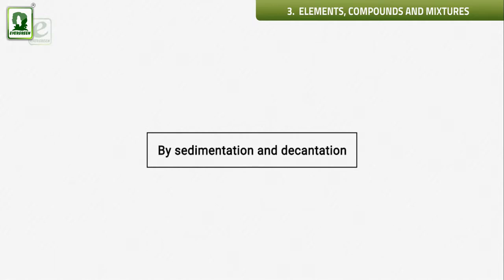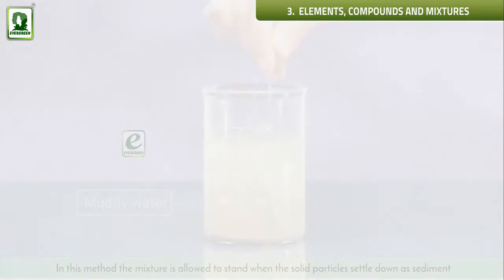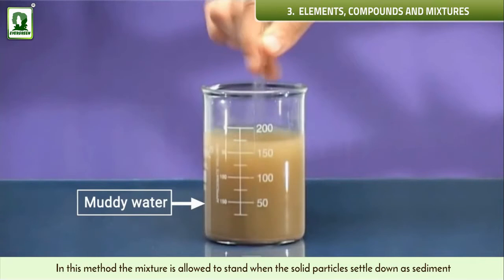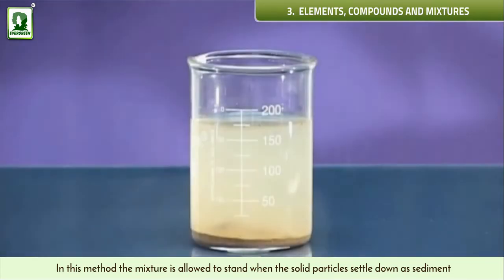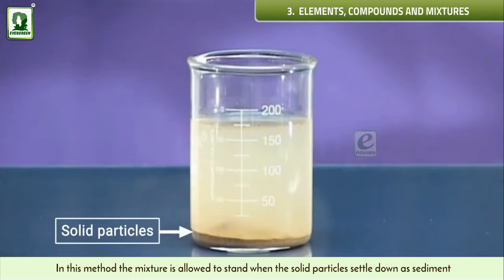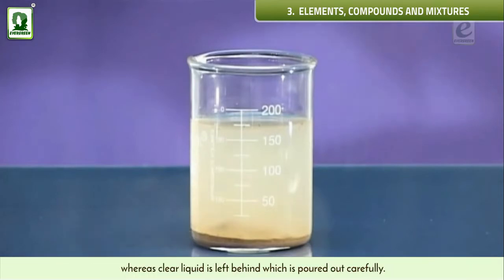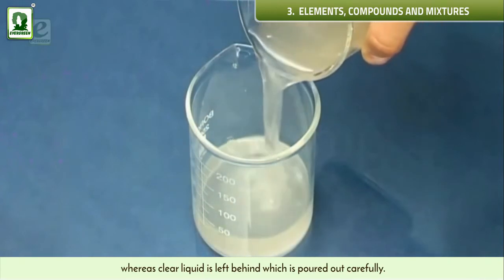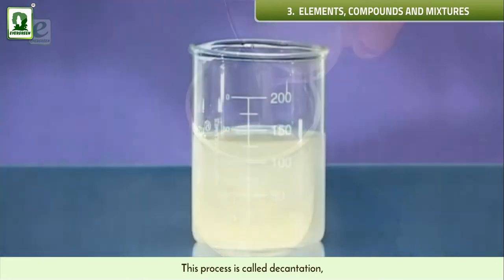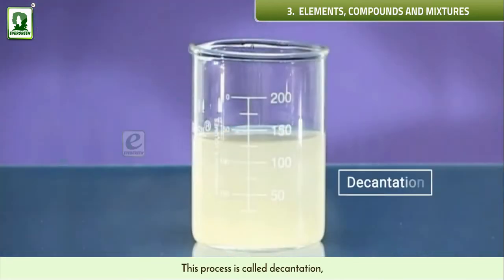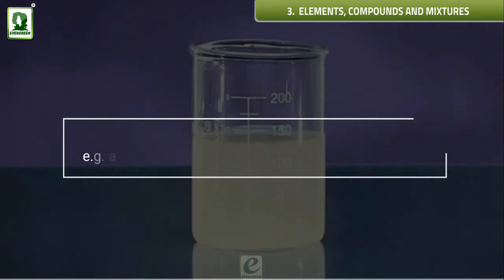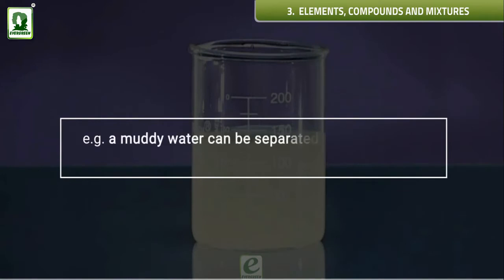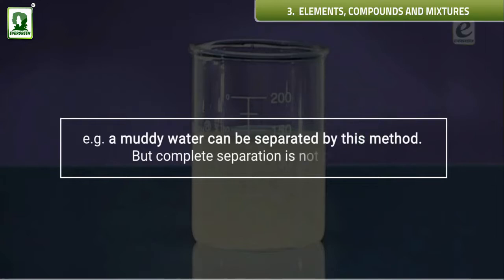Separation of solid-liquid mixtures by sedimentation and decantation: in this method, the mixture is allowed to stand. The solid particles settle down as sediment whereas the clear liquid is left behind, which is poured out carefully — this process is called decantation. For example, muddy water can be separated by this method, but complete separation is not possible.